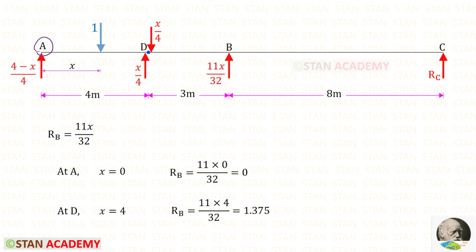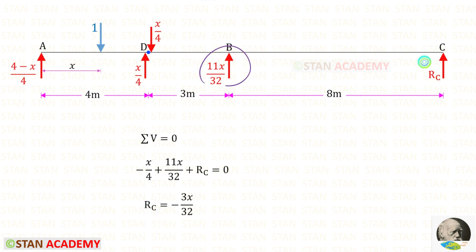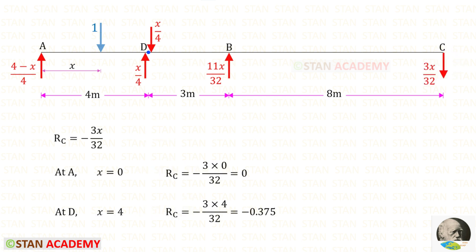For RB, we will get 11X upon 32. At point A, X will be 0, so RB will be 0. At point D, X will be 4, so RB will be 1.375. Now, on the right of D, we can apply this rule and find RC. RB and RC are acting upwards, so both are positive. This gives a negative value for RC, meaning the assumed direction is incorrect. We have to change the direction. At point A, X will be 0, so RC will be 0. At point D, X will be 4, so RC will be minus 0.375.